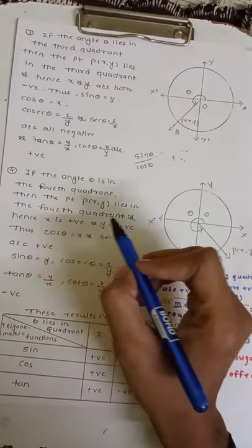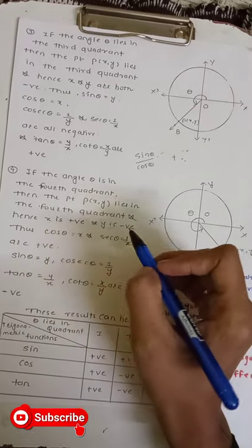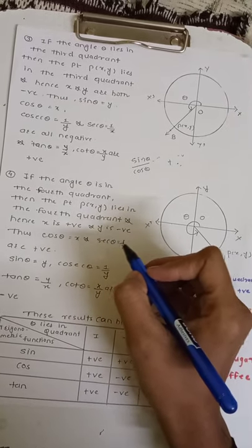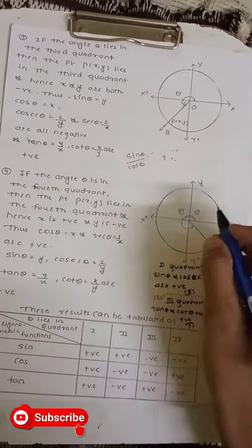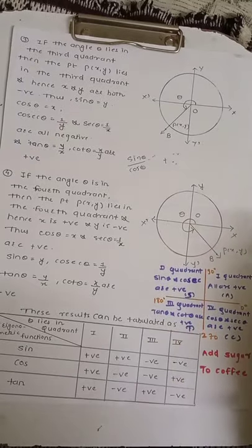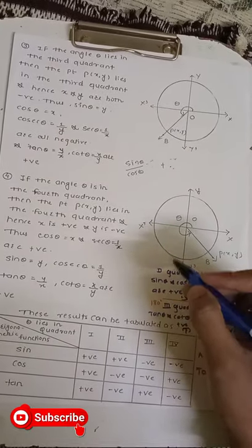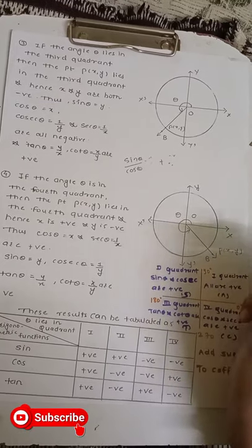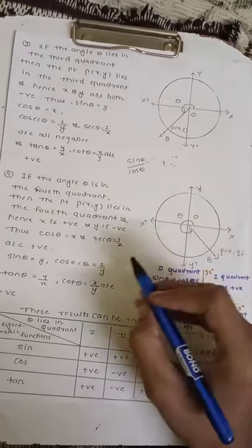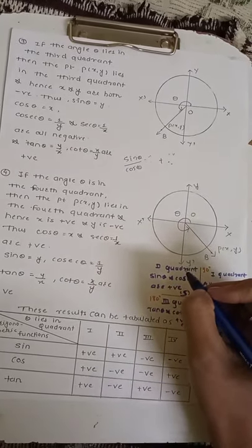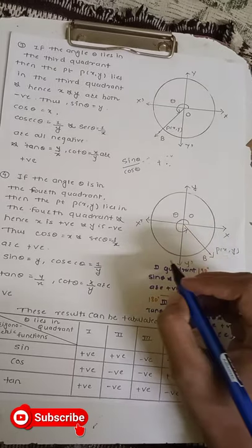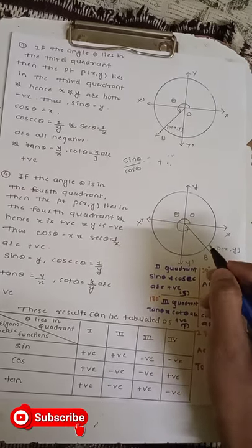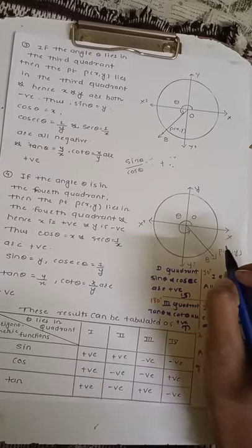In the fourth case, if the angle θ is in the fourth quadrant, then the point P(x, y) lies in the fourth quadrant, and hence x is positive and y is negative. So cos θ = x is positive, and sec θ = 1/cos θ is also positive. Since sin θ = y and y is negative in the fourth quadrant, sin θ is negative, and cosec θ = 1/sin θ is also negative.